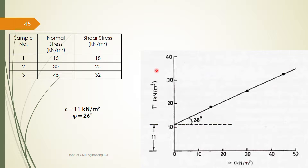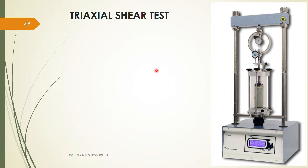Now we will move on to the next test using which we can find out shear parameters — it is known as the triaxial test. We have already completed direct shear test; now we have triaxial test. This is the setup for the triaxial test. It is a very flexible and accurate test compared to the direct shear test. In this test you have a cell made up of transparent glass, and inside this cell we fill water. Inside the water we keep the soil sample enclosed in a rubber membrane.